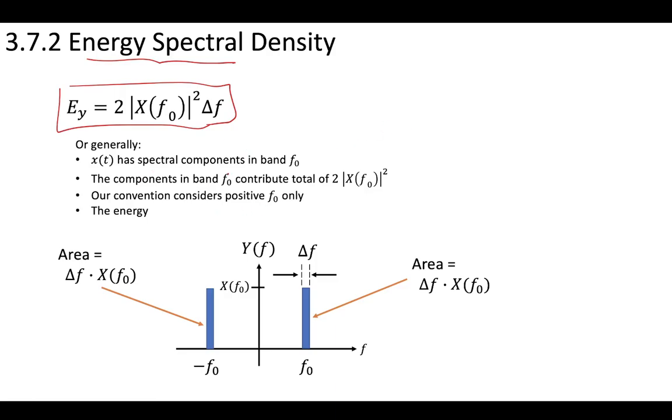Generally, if our input to the system had spectral components in this band f₀, then those spectral components contribute a total of 2|X(f₀)|² to the energy at the output.